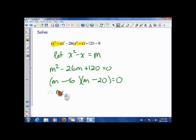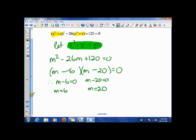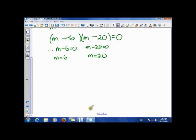So we have that m minus 6 is 0, which means that m is 6. And we have that m minus 20 is 0, which means that m equals 20. Now, I want to bring your attention to the fact that m is x squared minus x. So if I had x in my question, my answer needs to be x equals something.